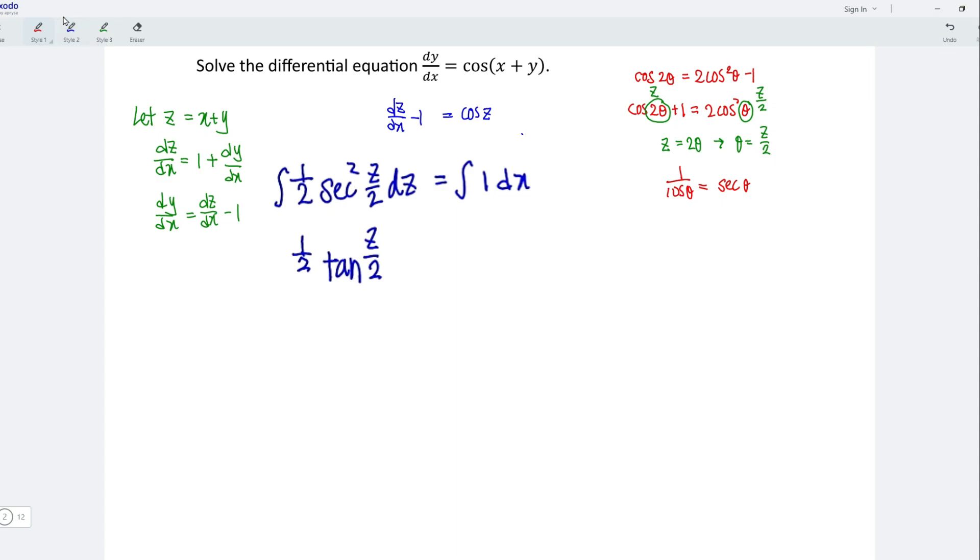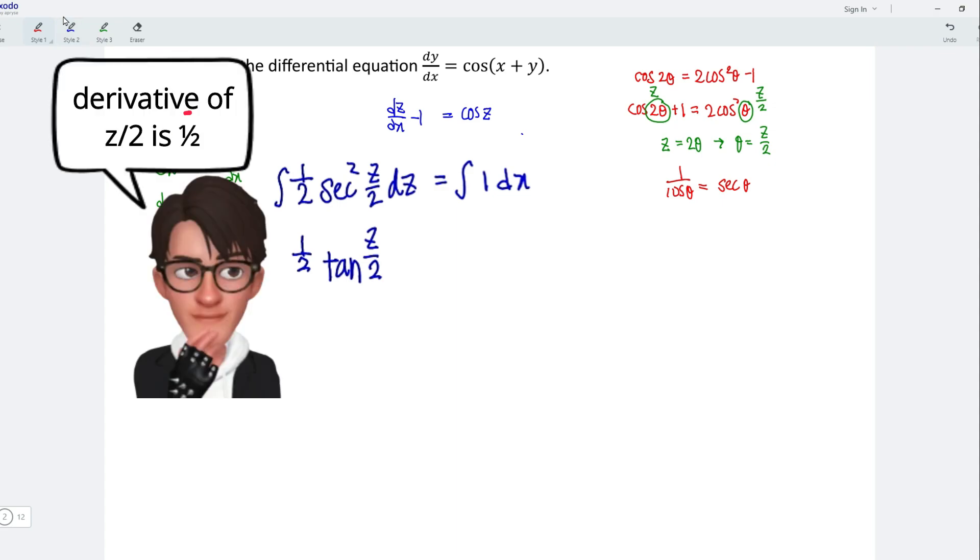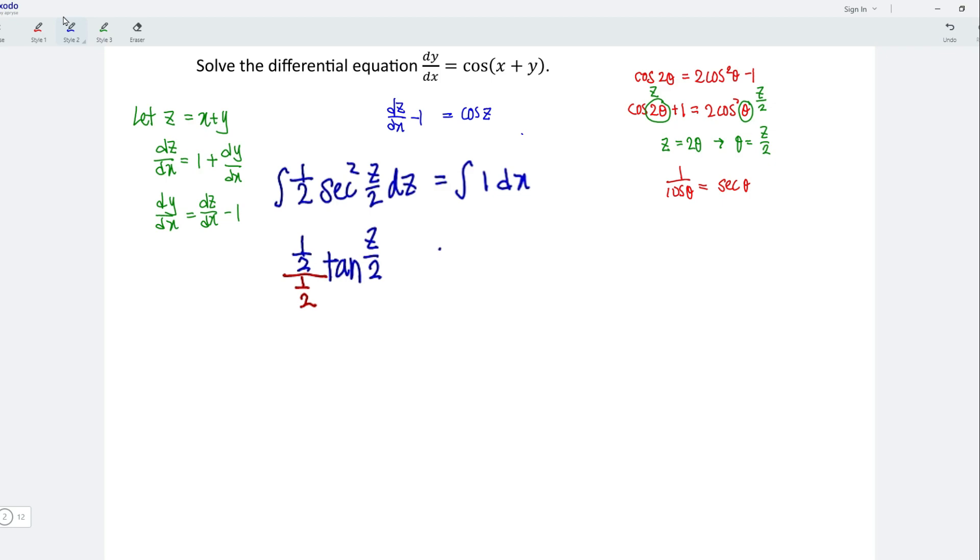Which means that instead of multiplying, we should reverse the process. That is, divide. So we have 1 over 2 at the denominator part. And now for the right-hand side, integrate 1 dx equals x. Remember, since this is integration, we have to add a constant c.